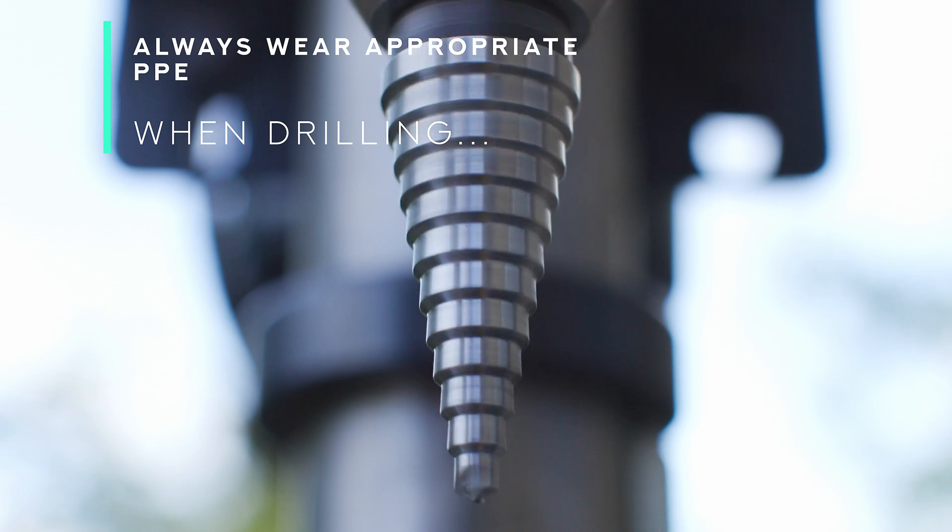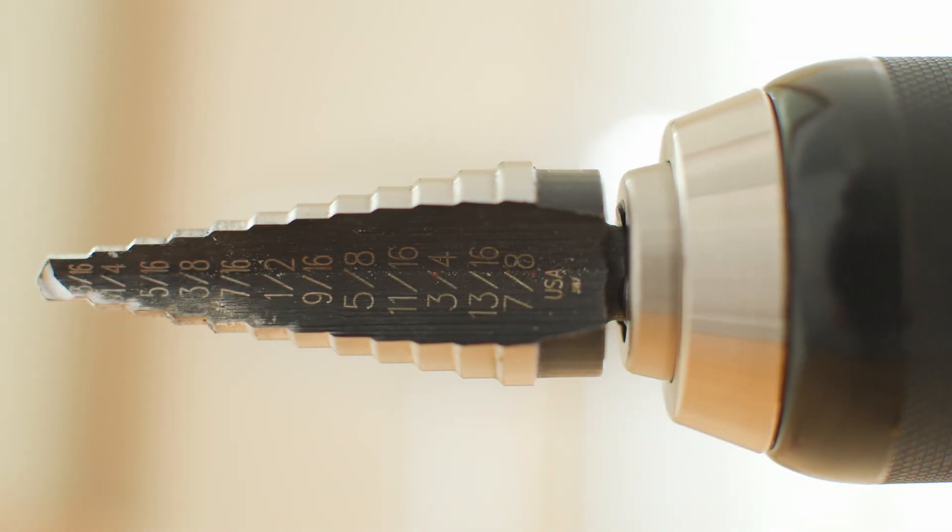This particular stepped bit, the Irwin No. 4 stepped bit, is my go-to bit in my kit. I use this bit all the time. It has 12 steps. Each step is 1/8th of an inch deep. That means it can create 12 different sizes of holes, perfect holes, in any material that is up to 1/8th of an inch thick.